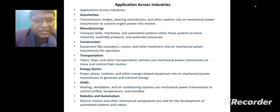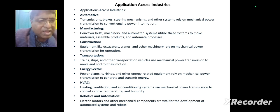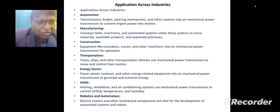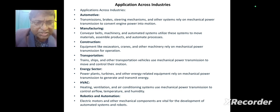For construction, equipment like excavators, cranes, and other machinery rely on mechanical power transmission for operation. For transportation, trains, ships, and other vehicles use mechanical power transmission to move and control motion. In the energy sector, power plants, turbines, and energy-related equipment rely on it to generate and transmit energy. In HVAC, heating, ventilation, and air conditioning systems use it to control air flow, temperature, and humidity. In robotics and automation, electric motors and mechanical components are vital for automated systems and robots.